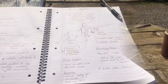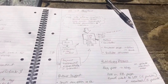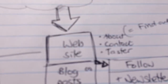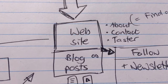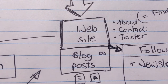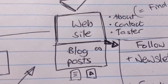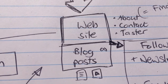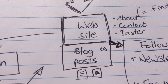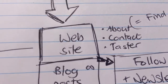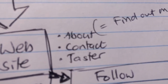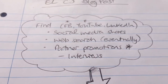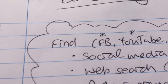Let me walk you through the customer journey for Expert Liberation itself. In the middle we've got the website — the website is always going to be pretty much the center of your world. That's the main place you want to send people to, and it's probably where your blog posts are. You might also publish your blog on third-party platforms like LinkedIn, Medium, or even Patreon. My website has an about page, a contact page, and some taster content.